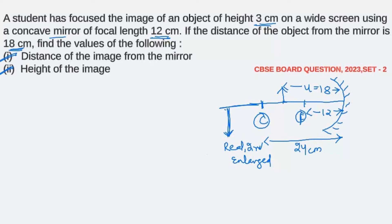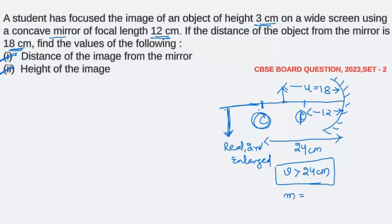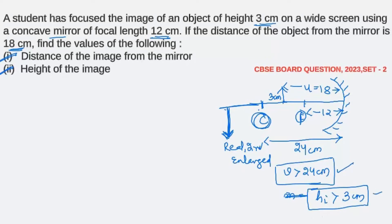Ideally, to cross-check our answer, we can understand that our image distance should be more than 24 centimeter, because if the image has to be formed beyond the center of curvature, and the center of curvature is at 24, it should be more than 24. Also, we have to see that the image should be magnified — its height should be more than the object height. Object height is given as 3 centimeter, so our height of the image should be more than 3 centimeter.